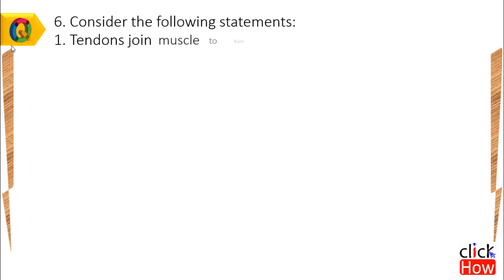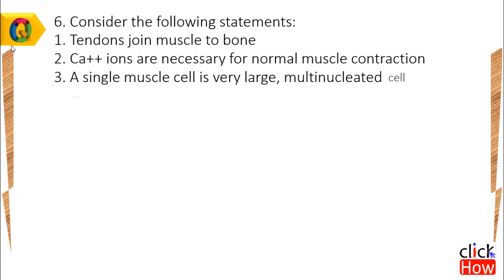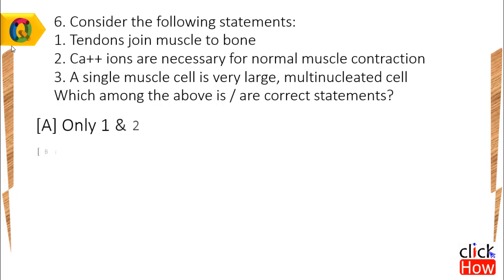Question 6: Consider the following statements: 1) Tendons join muscle to bone, 2) CA double plus ions are necessary for normal muscle contraction, 3) A single muscle cell is very large, multi-nucleated cell. Which among the above is or are correct statements? Option A) Only 1 & 2, B) Only 2 & 3, C) Only 1 & 3, D) 1, 2 & 3.